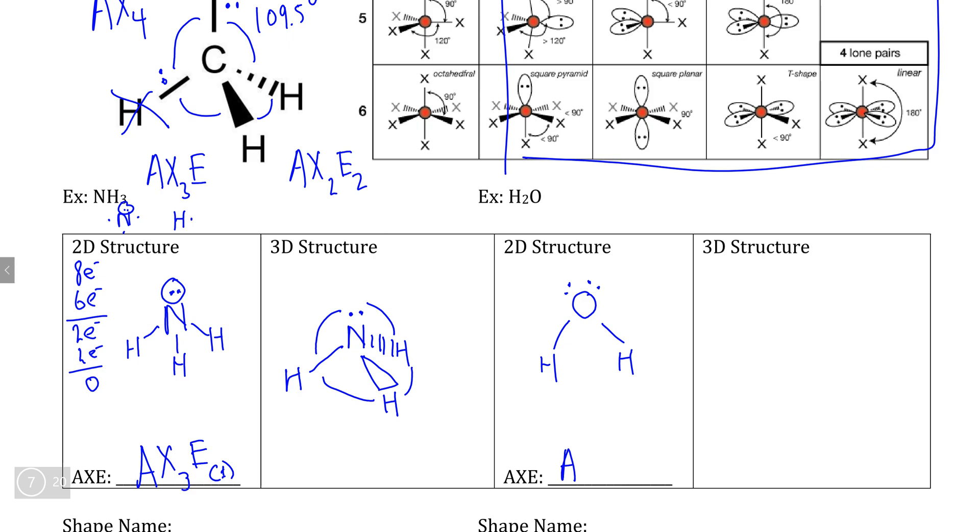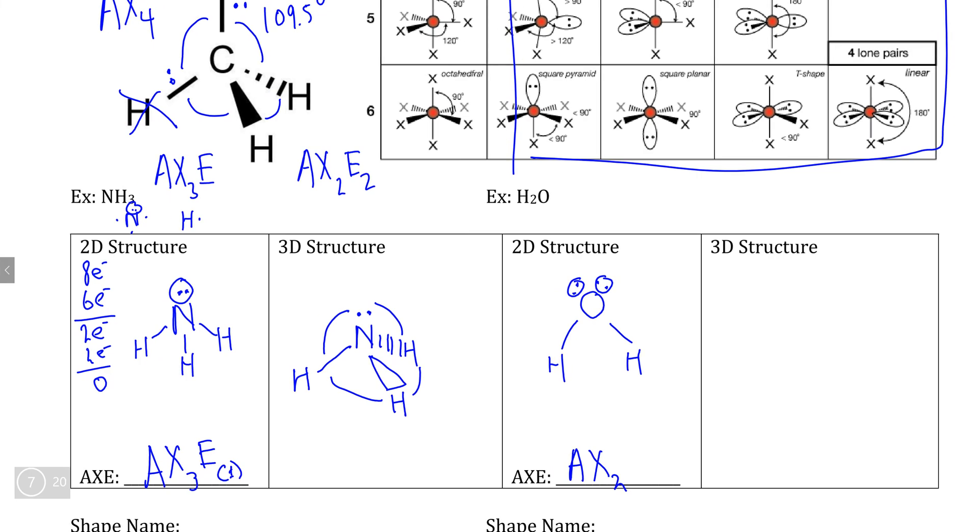If we find out what water's AXE notation is, again, oxygen is the central atom, our A. It's connected to two hydrogens, which means AX2. But unlike ammonia, water has two lone pairs, which means that this would be AX2E2.